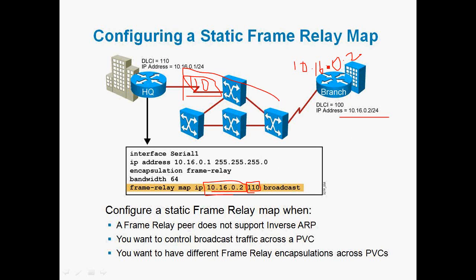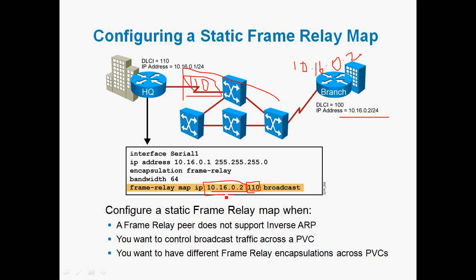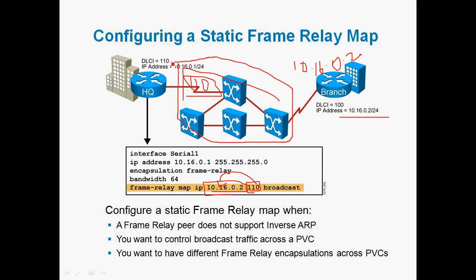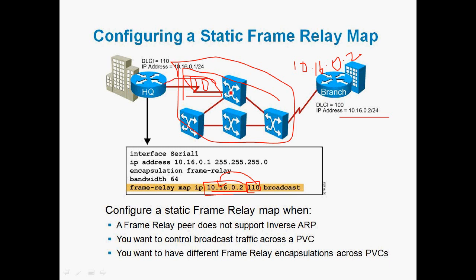The command maps IP address 10.16.0.2 to DLCI 110. By default, frame relay is a non-broadcast multi-access network, meaning broadcast is not supported. The 'broadcast' keyword enables mapping of that IP address to the DLCI value. The DLCI indicates different Permanent Virtual Circuits (PVCs). In the cloud we create logical connections — for example, DLCI 100 indicates the PVC from headquarters to branch office, and DLCI 200 indicates the PVC from headquarters to another branch office.